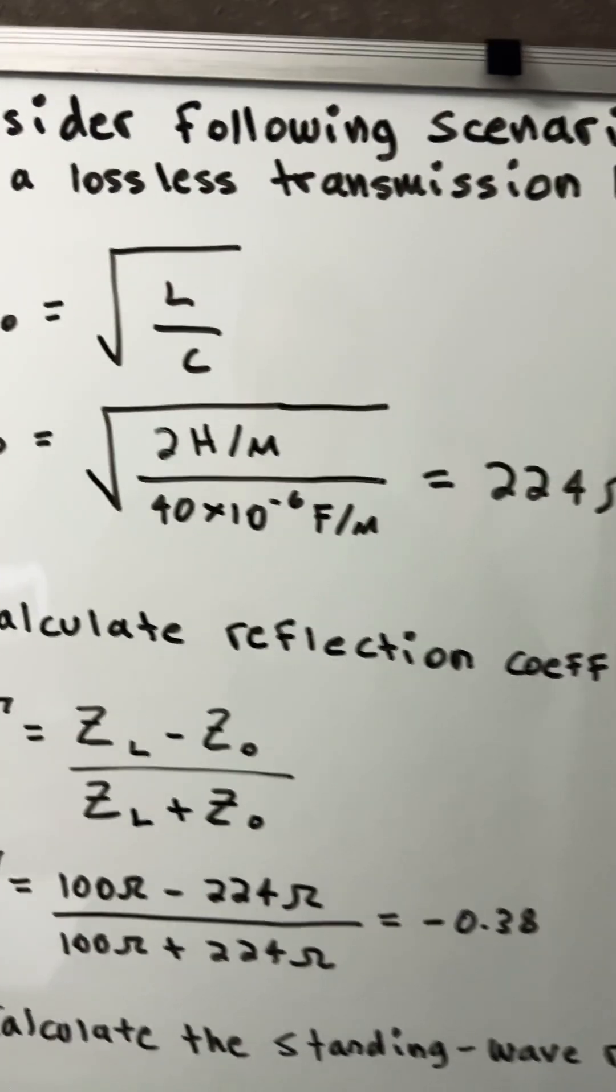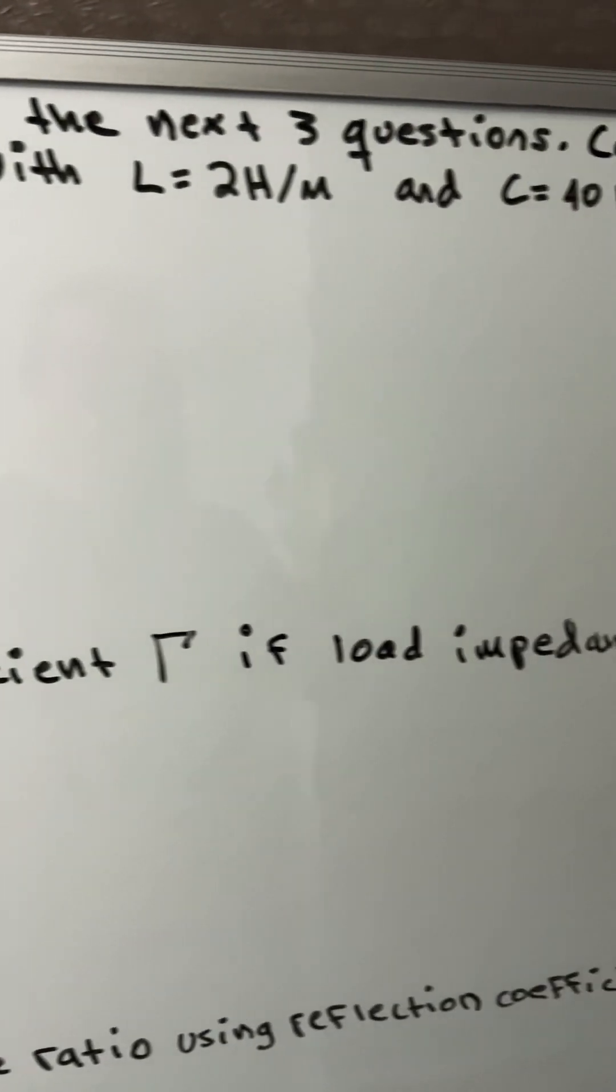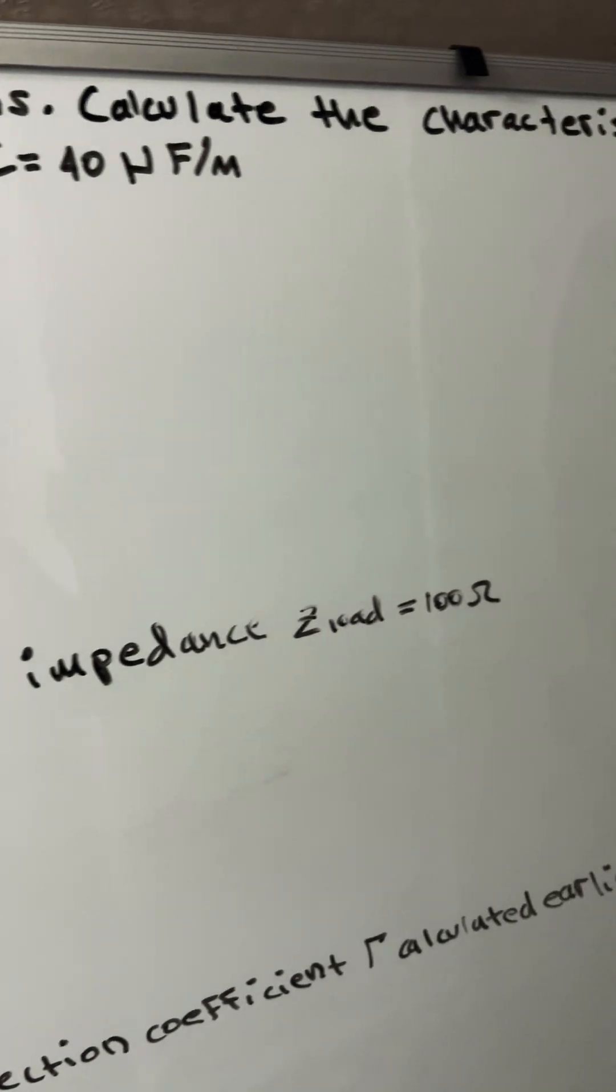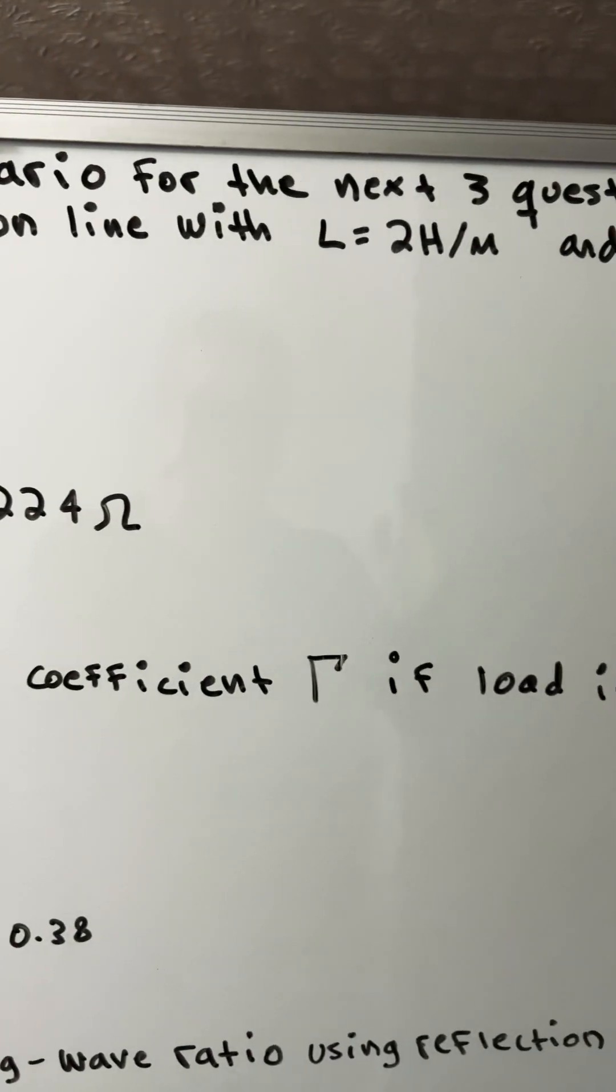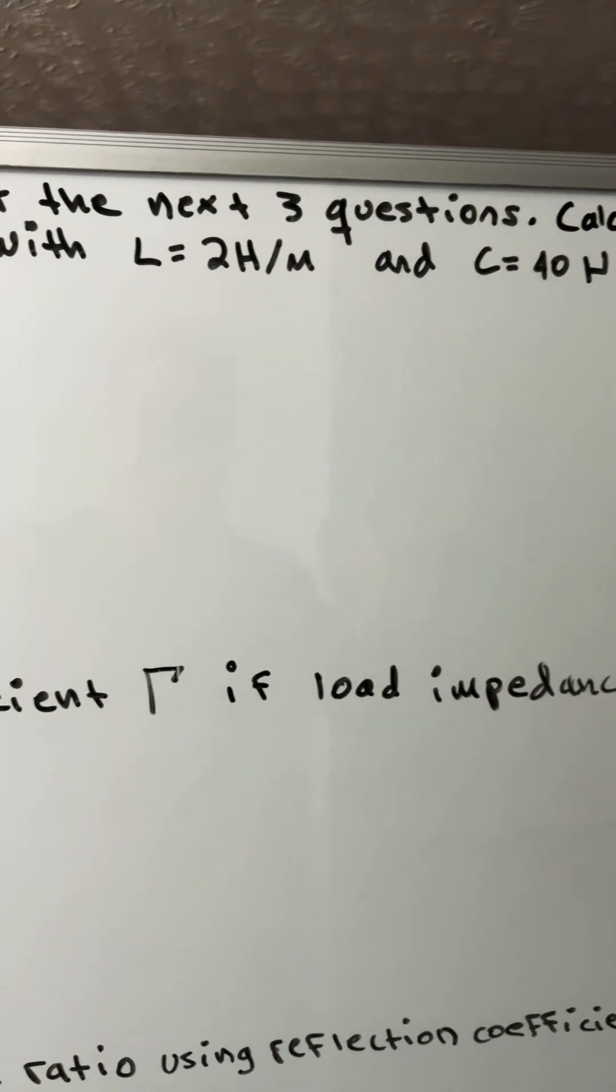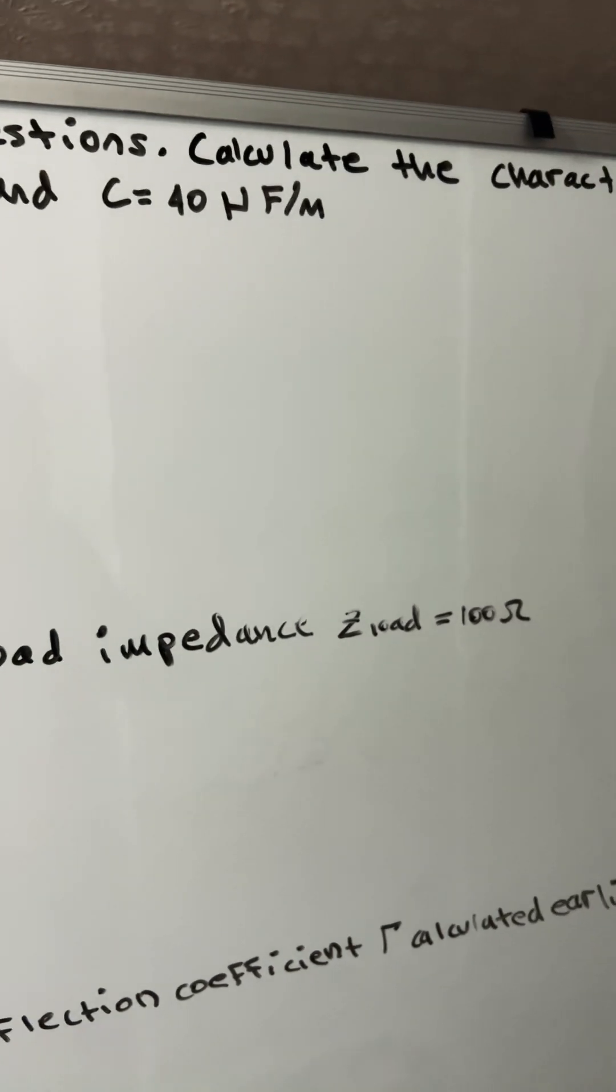Today I'm going to consider the following scenario for the next three questions. Calculate the characteristic impedance of a lossless transmission line with inductance of 2 Henry per meter and a capacitance of 40 microfarads per meter.